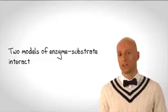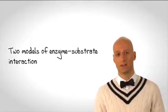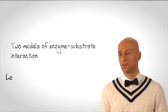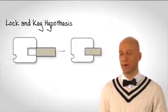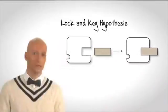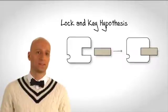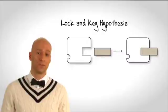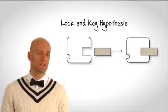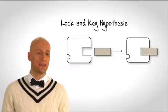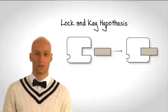There are two general models that hypothesize the way enzymes interact with their substrates. The first is the lock and key hypothesis. We have this demonstrated for you on the board. In the lock and key hypothesis, the three-dimensional conformation of the substrate fits exactly into the three-dimensional conformational space of the active site, in the same way that a lock and key interact in a very precise way.